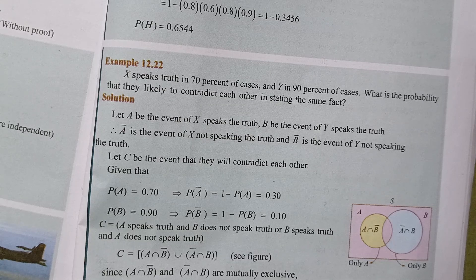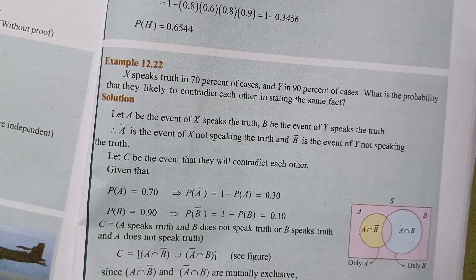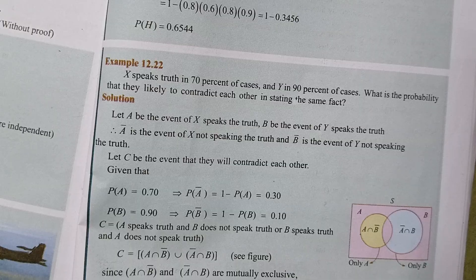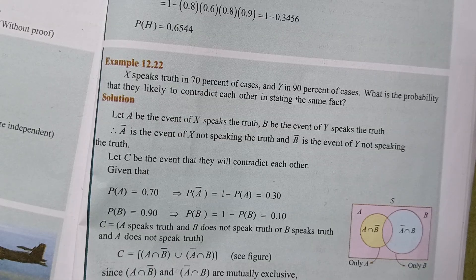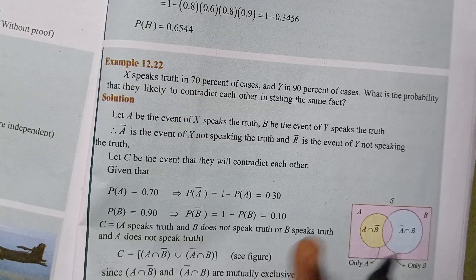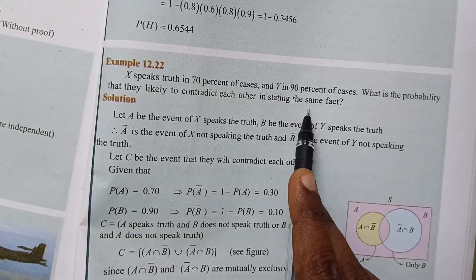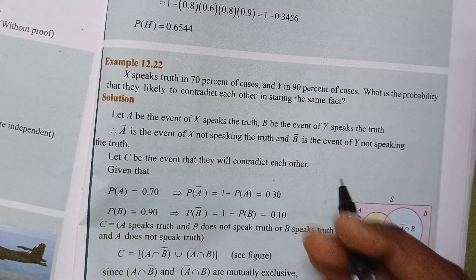Hi friends, I am Vino. 11th Mark Chapter 12, Example 12.22. X speaks truth in 70% of cases and Y in 90% of cases. What is the probability that they likely contradict each other stating the same fact?